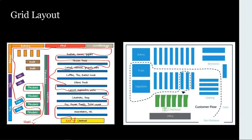One thing retailers can do to reduce the number of aisles customers skip is to put name brand items in the middle of the aisle — particularly for items customers buy frequently. For example, in the cereal, oatmeal, and granola aisle, putting cereal in the middle forces customers to go at least halfway through. Some will keep going and see other merchandise they would not have otherwise seen.